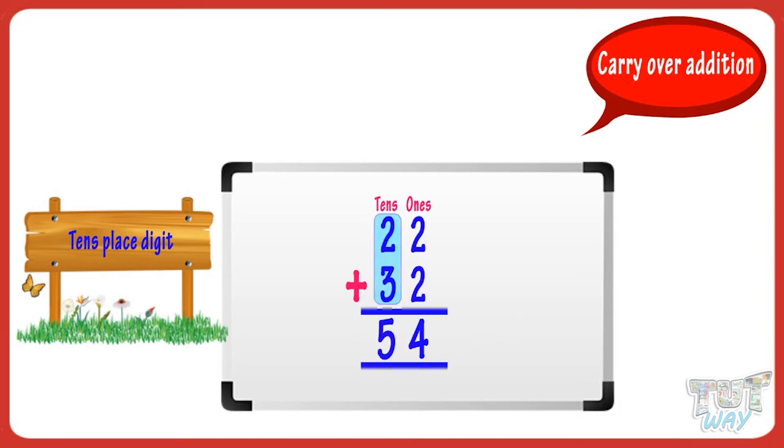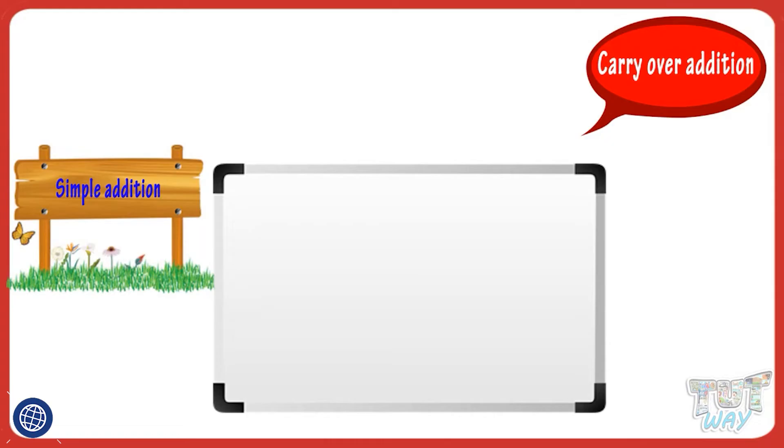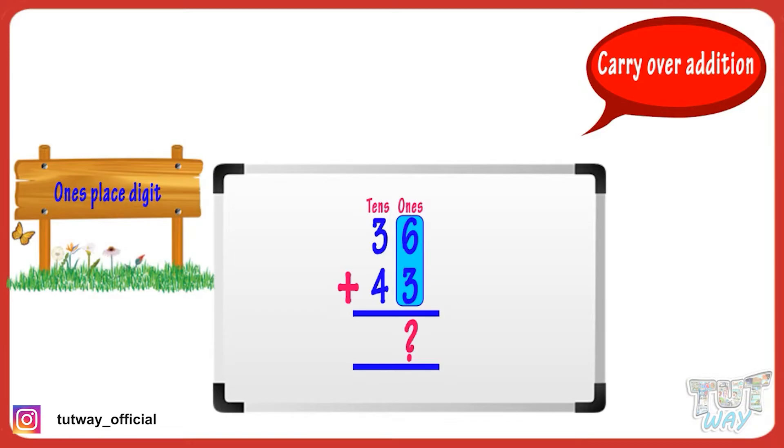Good! So we get 22 plus 32 equals 54. Here is another example. First of all, add the ones place digits and write the sum below the ones place digits. Now add the tens place digits and write the sum below the tens place digits.